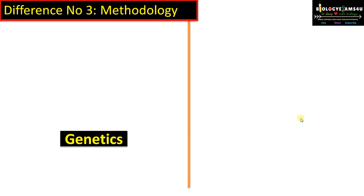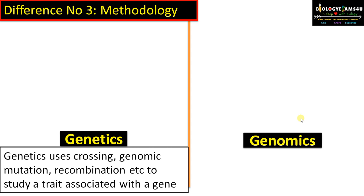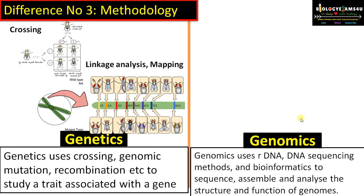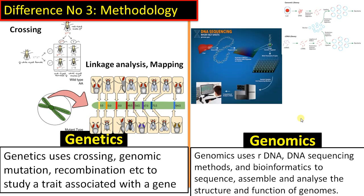Difference number three is regarding methodology. In genetics, we use classical methodologies like crossing, breeding, genomic mutation, recombination, and linkage studies to study a trait associated with a gene. Morgan's experiment and Mendel's experiment are classical examples that help us understand the effect of a particular gene.